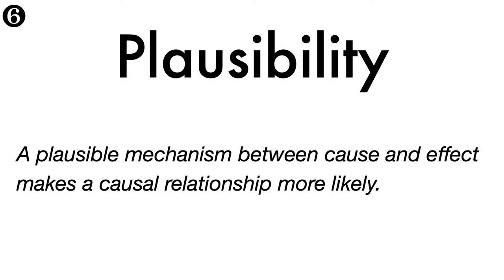Criterion six is plausibility. A plausible mechanism between cause and effect makes a causal relationship more likely. Not having a plausible mechanism currently does not rule out causation, but having one gives us greater confidence. If we have an explanation for how smoking might lead to lung cancer — for example, experimental data in animals — then we have biological plausibility, and that makes us more confident that we're dealing with a causal relationship.